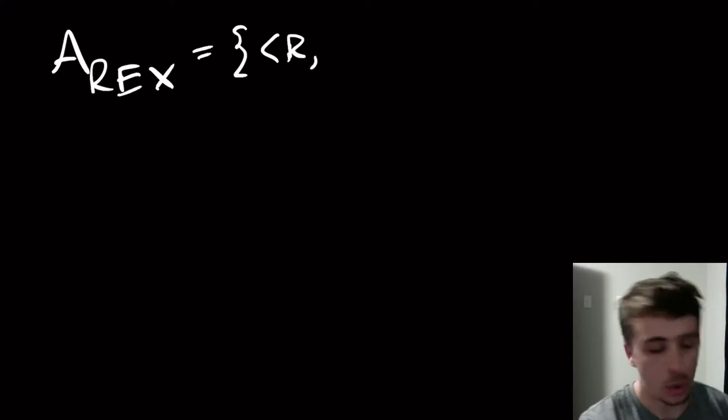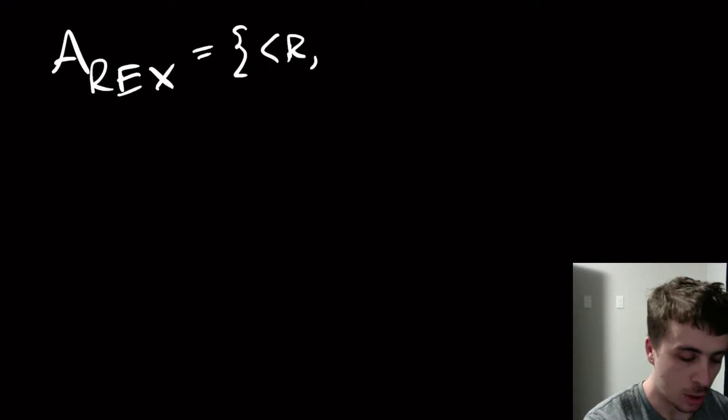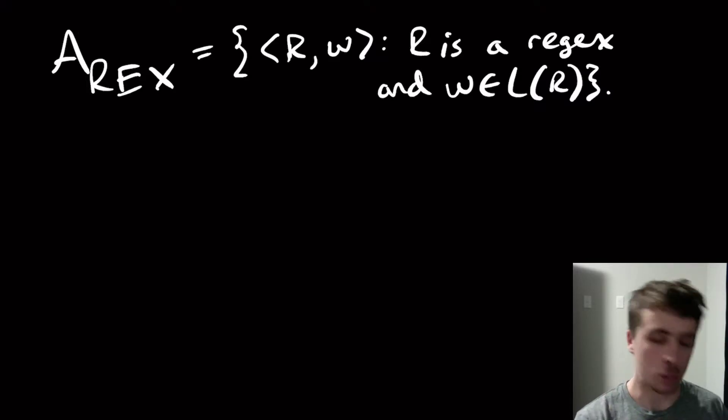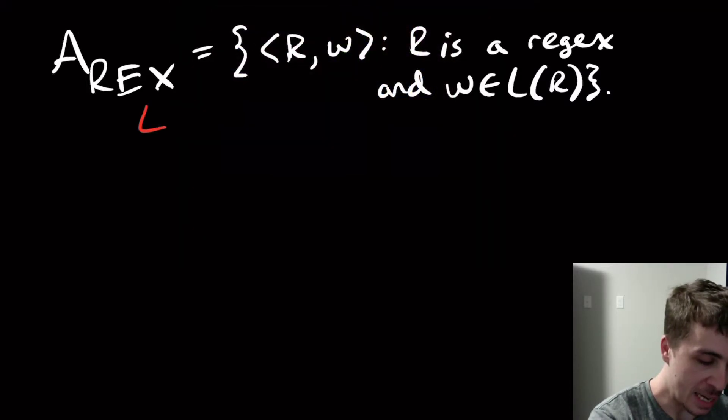So I'm going to define a sub rex here to be the set of all pairs encoded as a string, which are going to be a regex here, and then some string here r and w, where r is a regex and w is in the language of r. And what we want to do is we want to show that this guy is decidable.